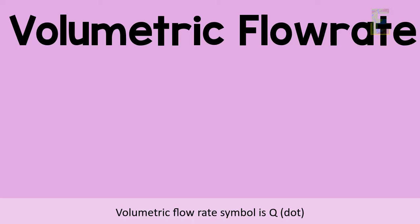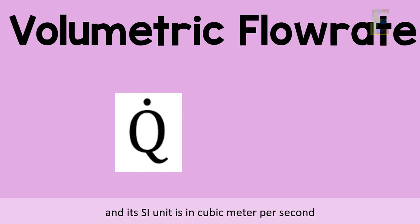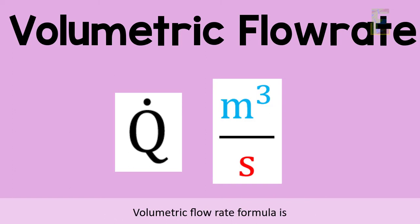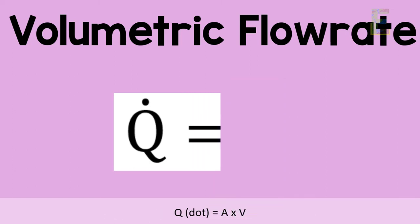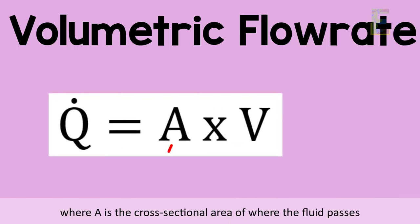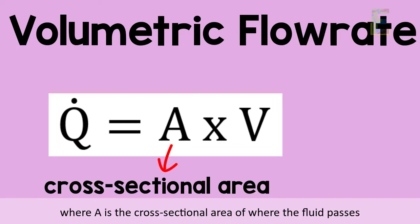Volumetric flow rate symbol is Q̇ (Q dot) and its SI unit is cubic meter per second. The volumetric flow rate formula is Q̇ = A × V, where A is the cross-sectional area of where the fluid passes.